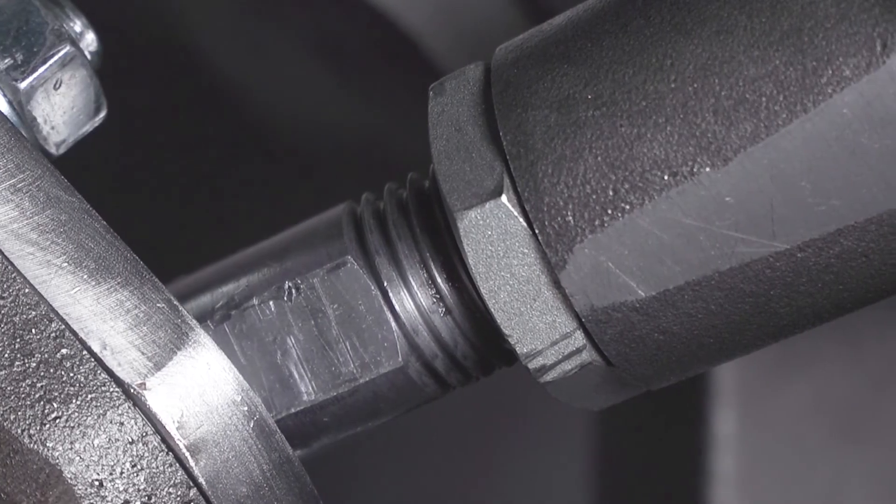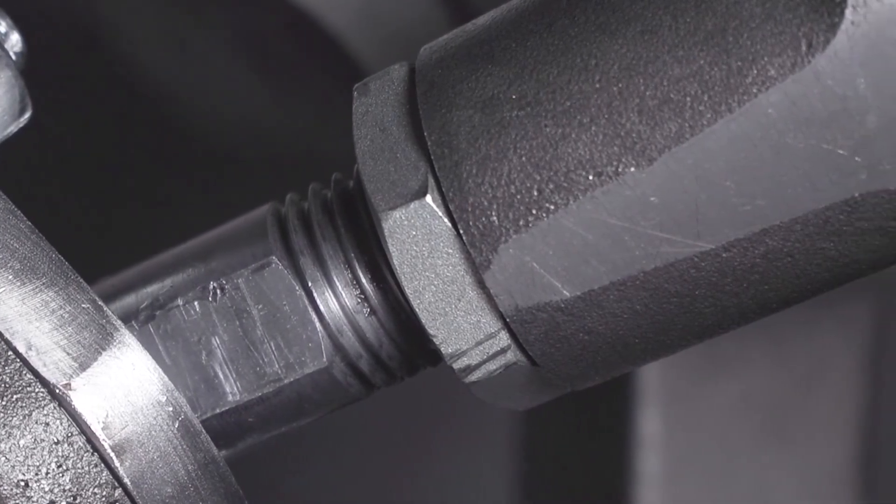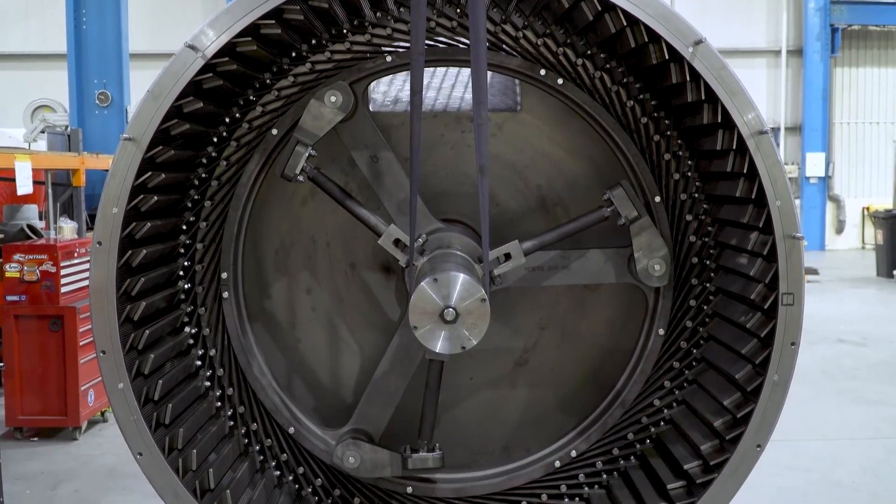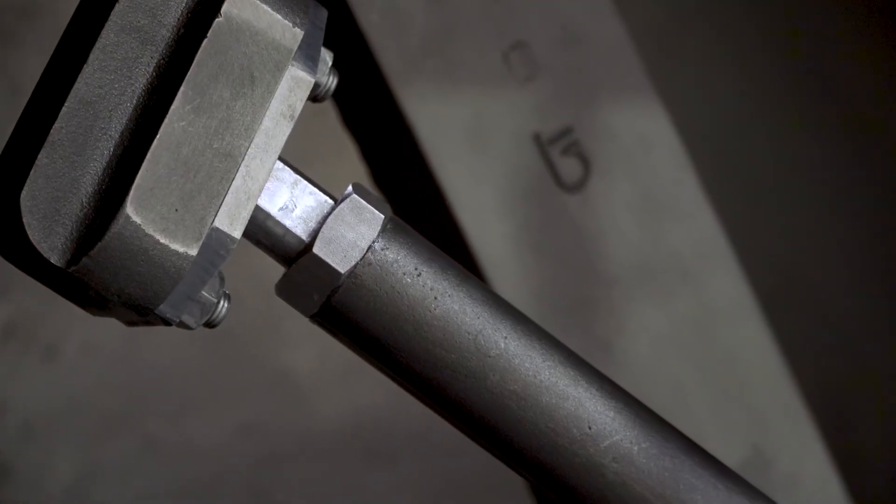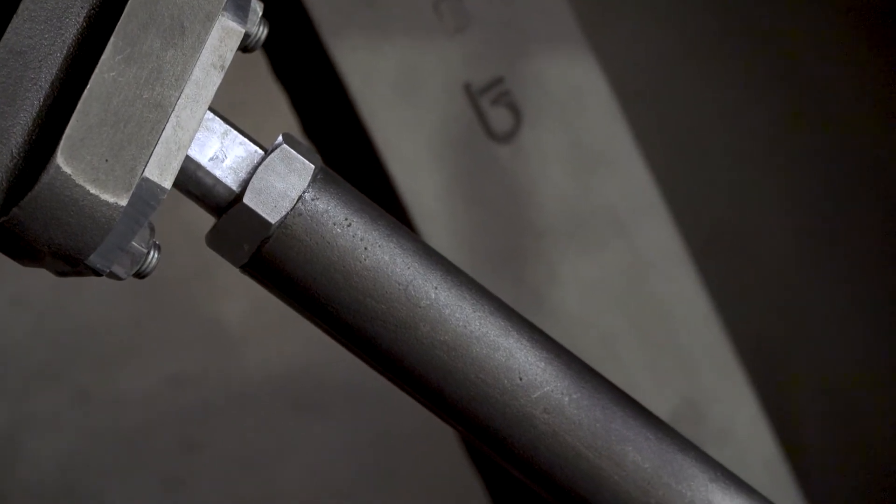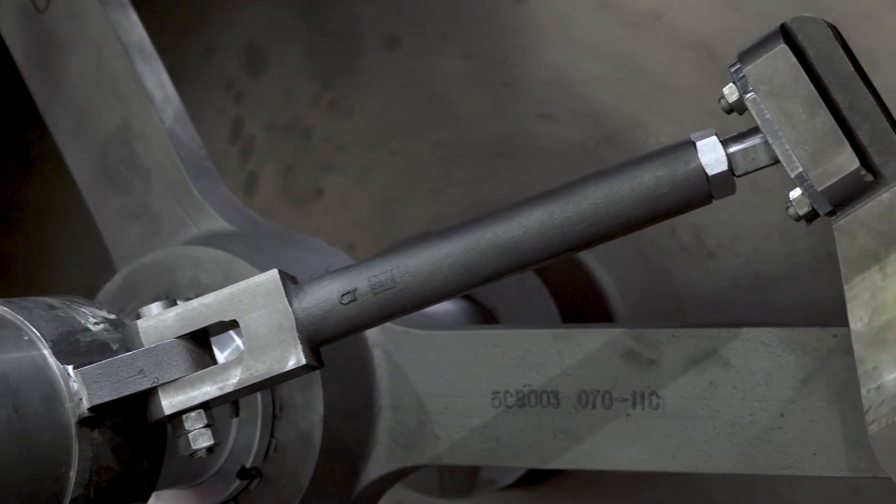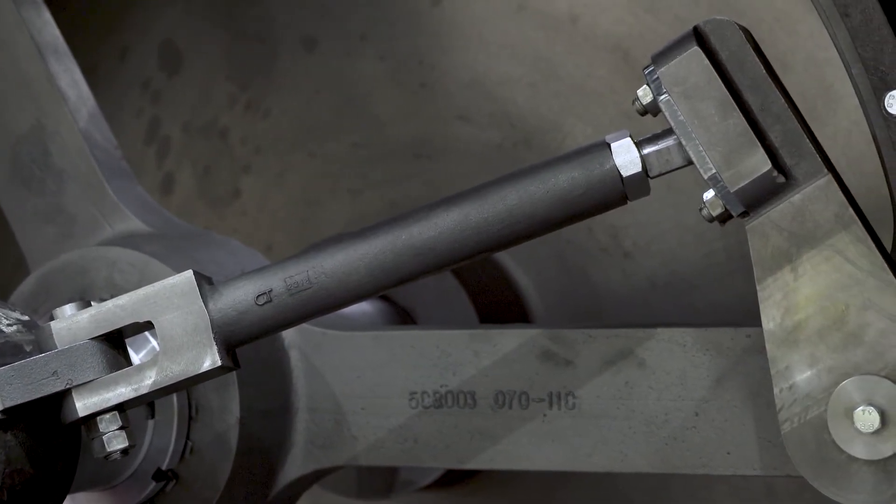There are two toggle arms on models up to 2,000 kg capacity, three toggle arms on a 3,000 kg standard, 3,000 kg duplex and 5,000 kg duplex model, and if you have a 5,000 kg standard model, it has four toggle arms.